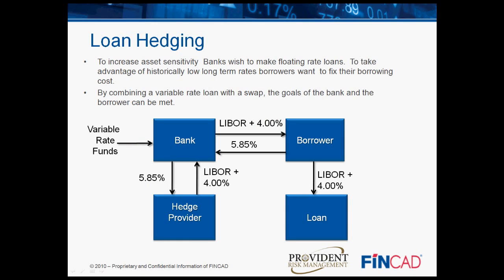Most of our banks prefer to make variable-rate loans, and some will not make any fixed-rate commercial loans at all. In today's market, many borrowers want to lock in a low, long-term fixed rate. In this example, we meet the objective of both the bank and the borrower by combining a variable-rate loan with a swap. Firstly, we make a loan at LIBOR plus 400 basis points. Secondly, the bank executes a swap with the borrower. Under that swap, the bank pays LIBOR plus 400 basis points, and the borrower pays a fixed rate of 5.85%. From the borrower's perspective, the LIBOR plus 400 payments cancel out, and he is left paying 5.85% fixed. The bank passes the 5.85% fixed from the borrower to its hedge provider and is left earning LIBOR plus 400 basis points.